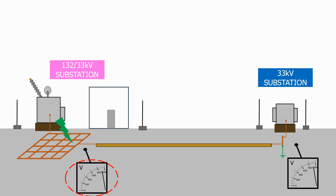The cable sheath is grounded to the 132 to 33kV substation, but also to the 33kV substation. As the cable sheath is connected to both grounding systems, the voltage potential of the ground grid below the 33kV substation will also increase to 960 volts — as will anything connected to the grounding grid, including the switchgear and transformers.